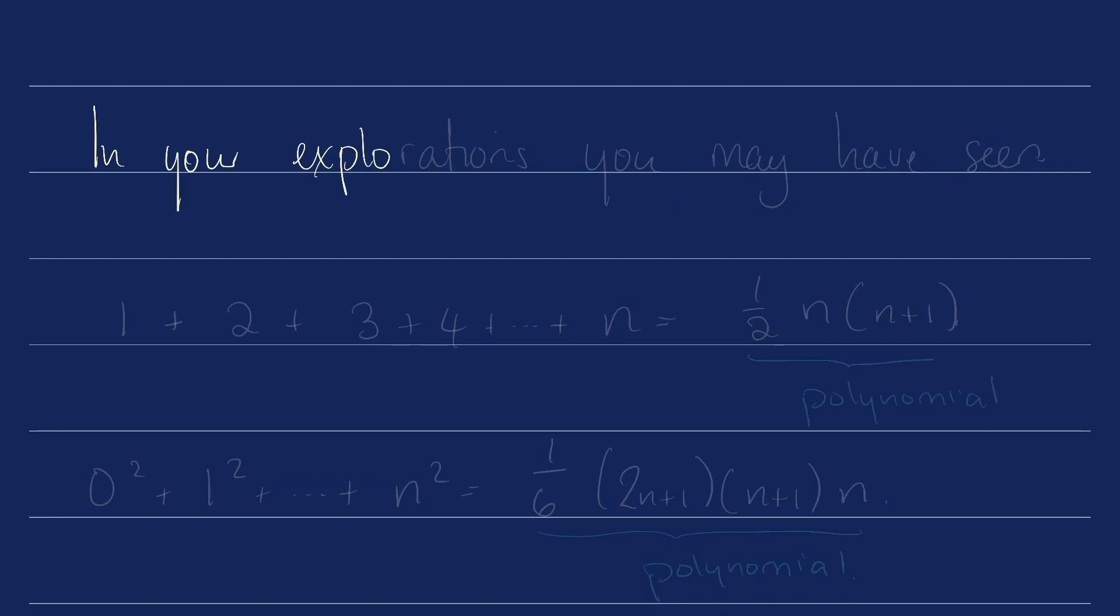In your mathematical explorations you may have seen, in fact you may have proved, that the sum of the first n integers is 1/2 times n times n plus 1, or that the sum of the squares of the first n numbers is 1/6 times 2n plus 1 times n plus 1 times n.